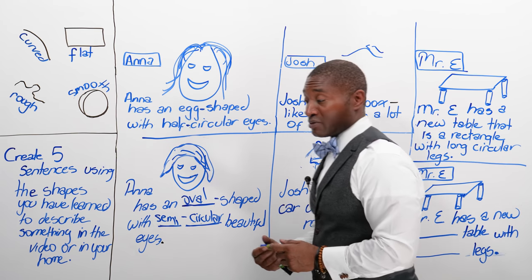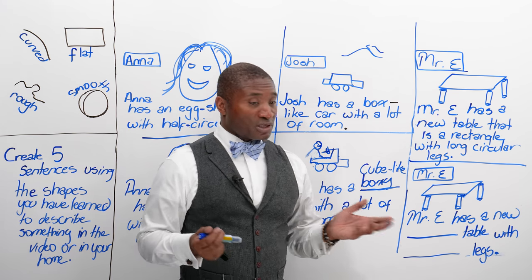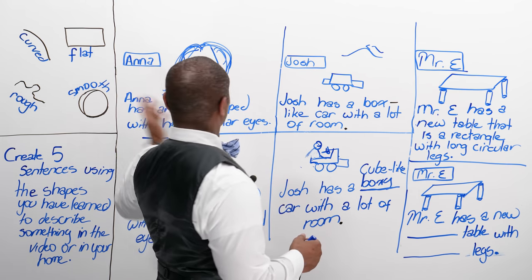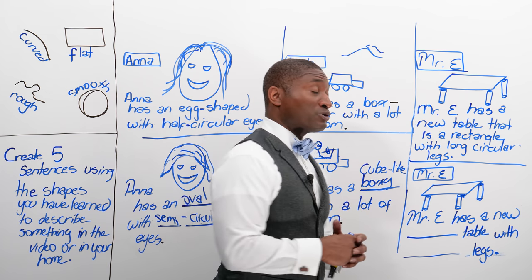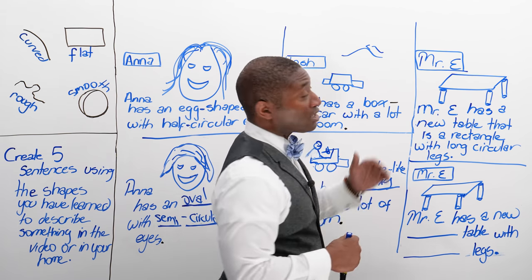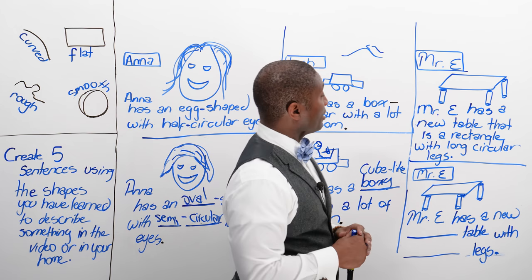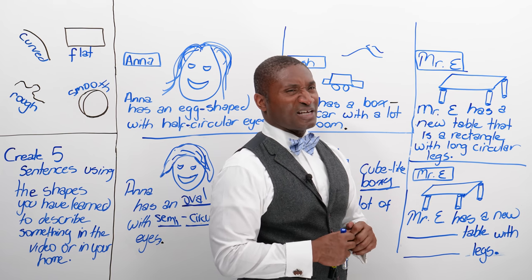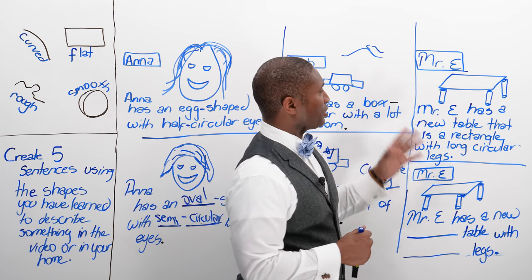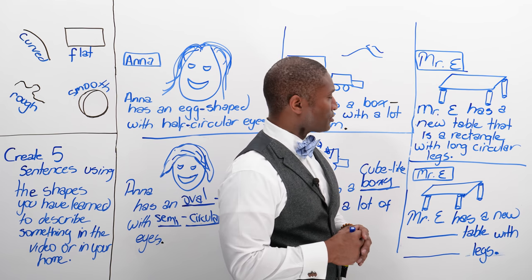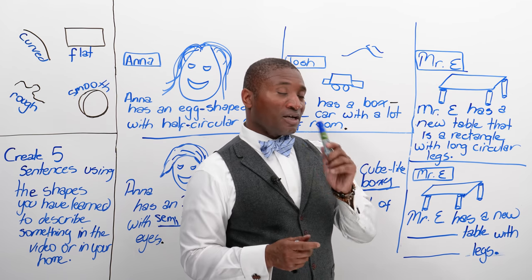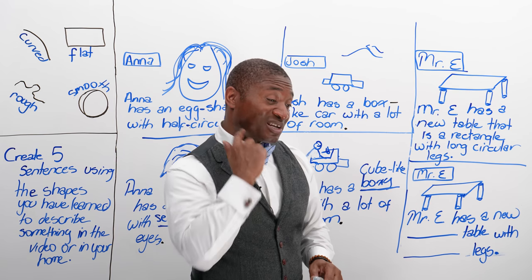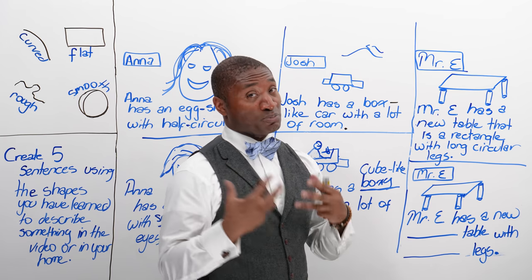So now we've talked about people and something you would drive. Let's do the last thing — something you would find in your home. How would you describe a new table? Mr. E just purchased a new table. A rectangle with long circular legs — it doesn't even sound close. Not even close. But if we go over here and use some of the new words, when he bought the table nobody said this to him — they used better words.